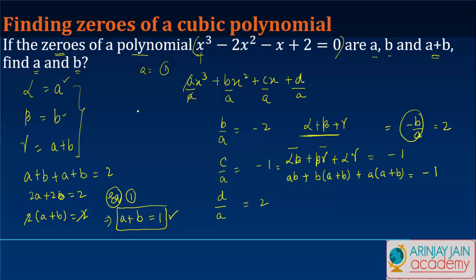I've simply replaced these with the values we had initially. We know a+b equals 1, so substituting: ab + b(1) + a(1) = -1, which gives ab + b + a = -1.